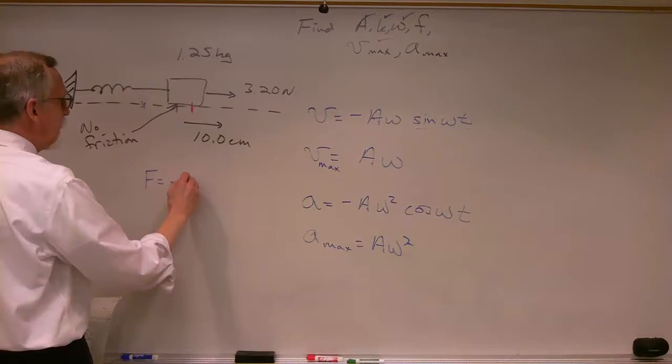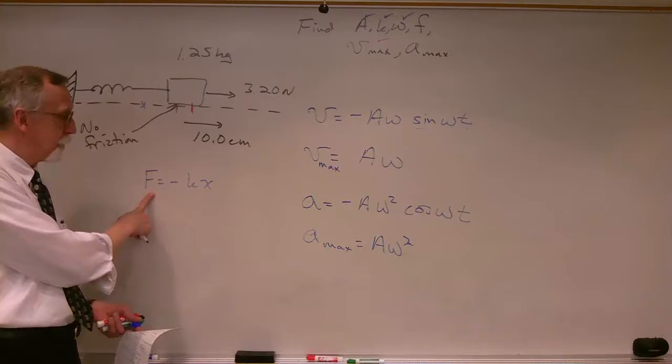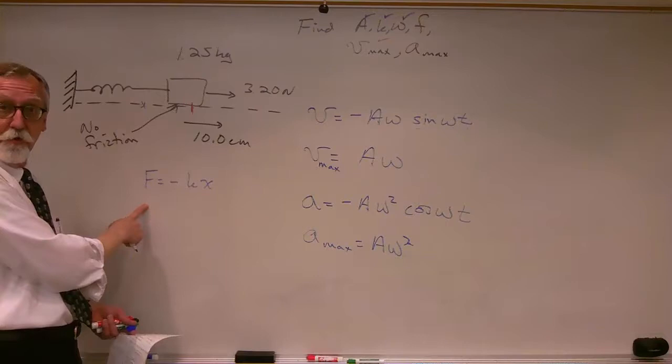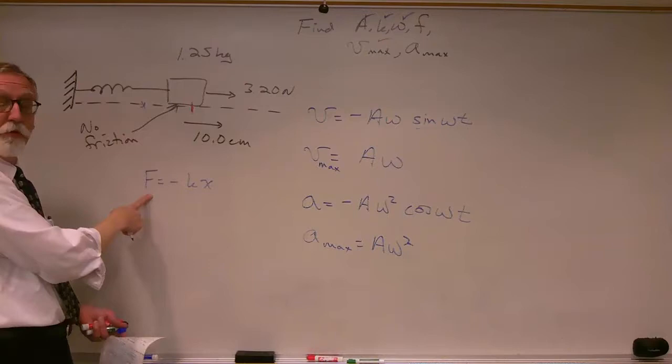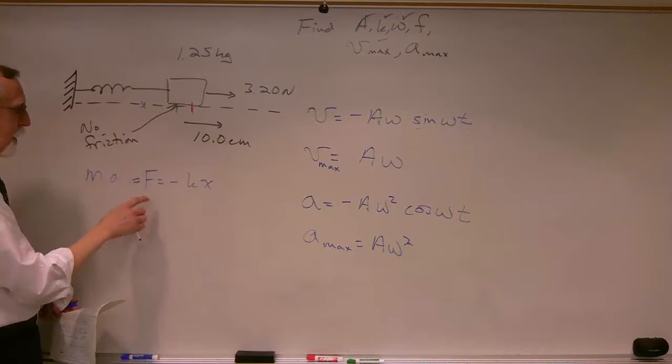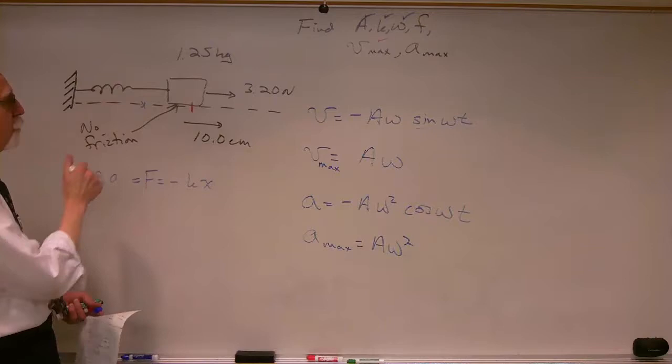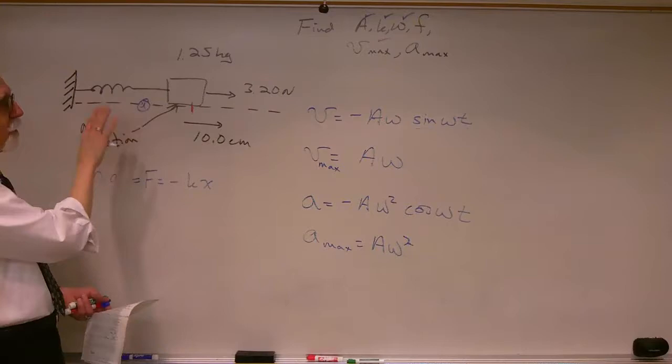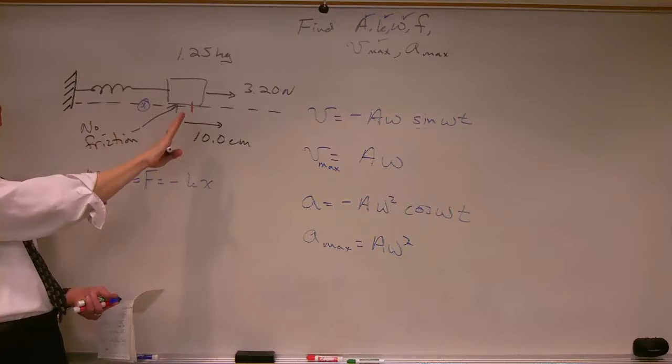Going back to F equals minus kx — the force is maximum when x is at its largest negative value. That's when the force is greatest, and since F equals ma, the largest force means the biggest acceleration. So the acceleration has its maximum value when the object is at its most negative position — that's when the spring is compressed the most, pushing back to the right and giving it the greatest positive acceleration.